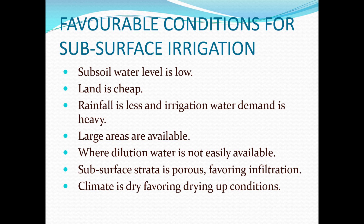Favourable conditions for subsurface irrigation: the subsoil water level should be low, because the pressure difference allows movement. The land should be cheap, rainfall less, and irrigation water demand heavy. A large area should be available. Dilution water should not be easily available, and the climate conditions should be dry so that the sewage dries up, enabling measurement of efficiency and allowing the dry solids to be reused.